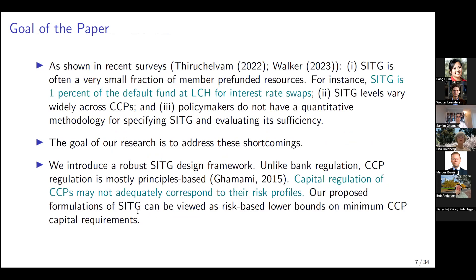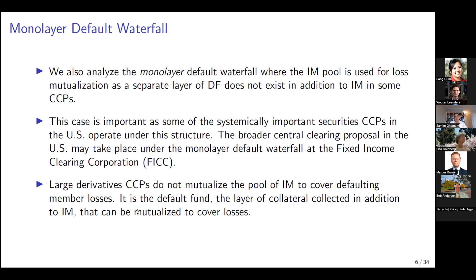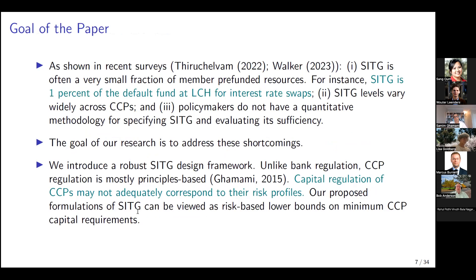Can you say what mutualization means? Essentially, it means sharing the remaining losses among surviving members by allocating these losses to their pre-funded default fund contributions—that is often referred to as loss mutualization. DTCC and all its subsidiaries operate under the so-called monolayer default waterfall. FIC is likely to become the CCP to clear almost all parts of the treasury market, both the cash part and the repo part, so it makes sense to analyze the monolayer default waterfall as well.